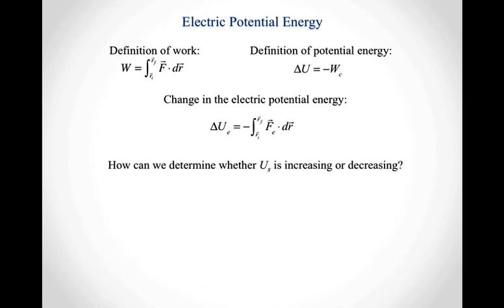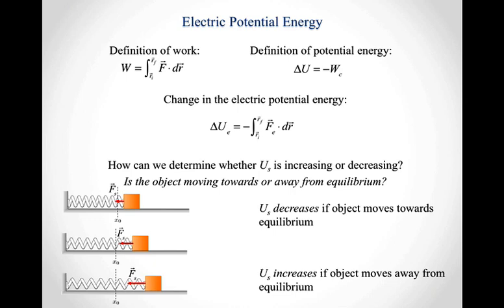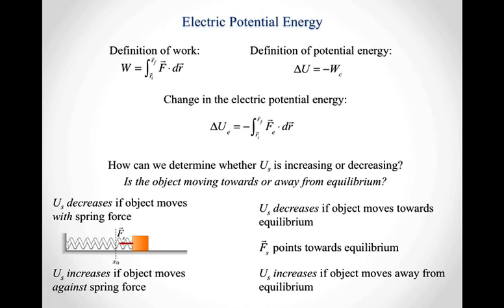What about the elastic potential energy? The question was: is the object moving towards or away from equilibrium? If we have some object attached to the end of a spring and pull it away from equilibrium, there's a spring force trying to pull it back. If the object moves back towards equilibrium, the elastic potential energy decreases. If the object moves even farther away from equilibrium, the elastic potential energy increases. Since the elastic force always points back towards equilibrium, we can reframe this: the elastic potential energy decreases if the object moves with the spring force, and increases if the object moves against it.